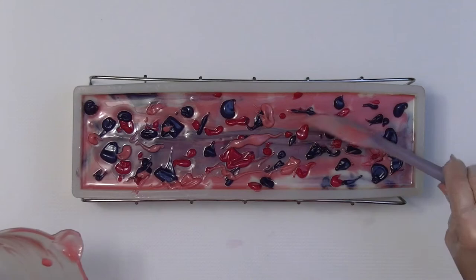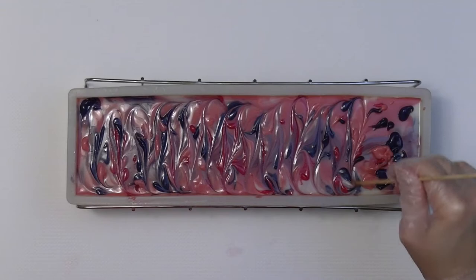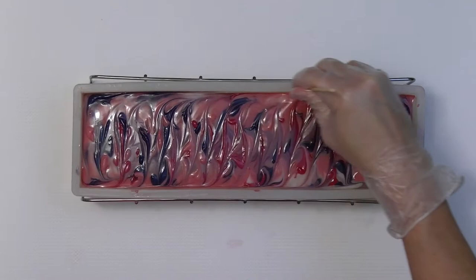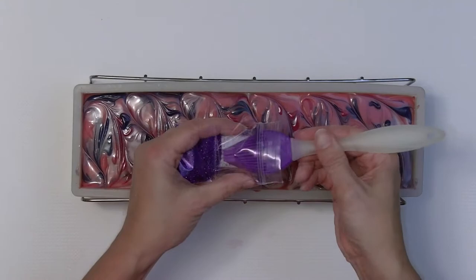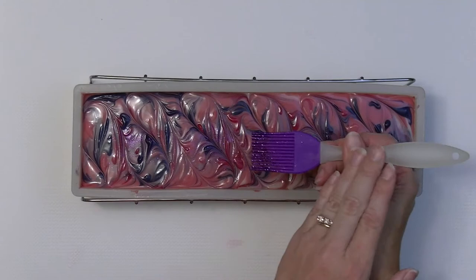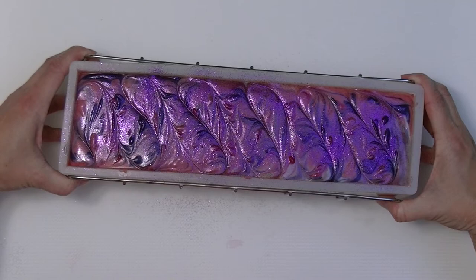Then a little skewer design. Time to add the amethyst glitter. Now to put the mold holder over the top to brace the sides.